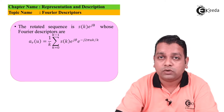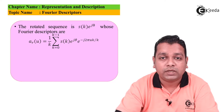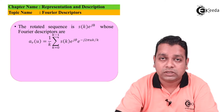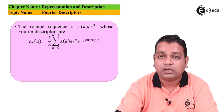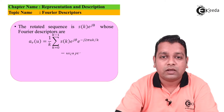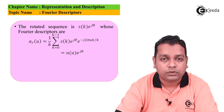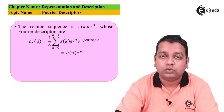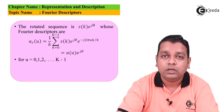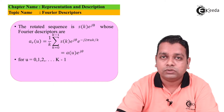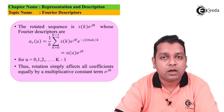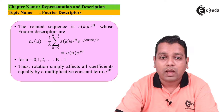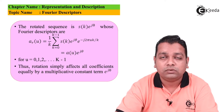which simplifies to a(u)·e^{jθ}, for u = 0, 1, 2, ..., K-1. Thus, rotation simply affects all the coefficients equally by a multiplicative constant e^{jθ}. The table we now visualize summarizes the Fourier descriptors for a boundary sequence s(k) that undergoes rotation, translation, scaling, and changes in starting point — some basic properties of the Fourier descriptor.